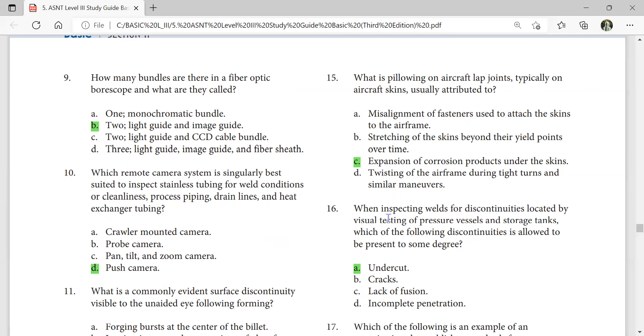When inspecting welds for discontinuities located by visual testing of pressure vessels and storage tanks, each of the following discontinuities are allowed to be present to some degree: undercut.